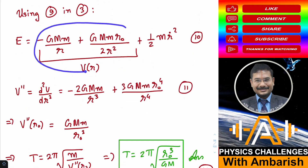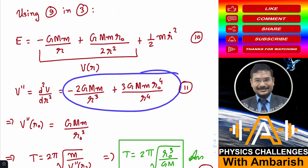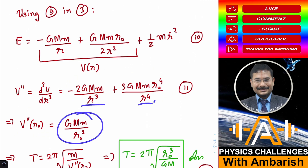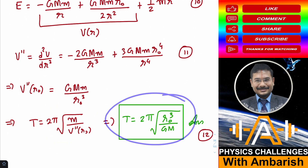Now take the second derivative of V_eff and evaluate it at R₀. I've done this using Mathematica — you can also do it manually, it's not a very difficult differentiation. The second derivative of the effective potential function evaluated at R₀ comes out to be GM/R₀³. So the time period simply becomes 2π times the square root of m divided by V''(R₀), which equals 2π times the square root of R₀³/(GM). That is our answer to the first part of the problem. You can try playing this video at 0.75× speed to follow everything completely.